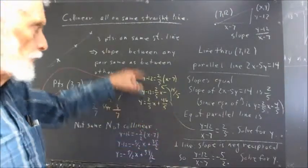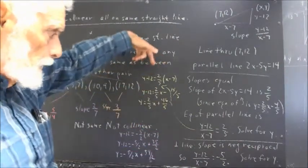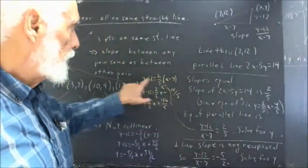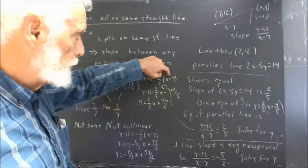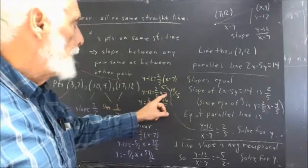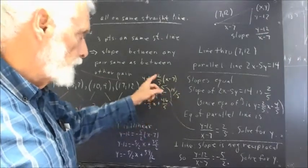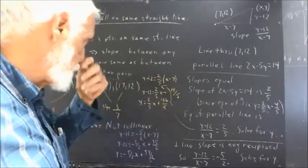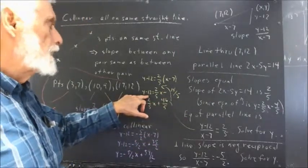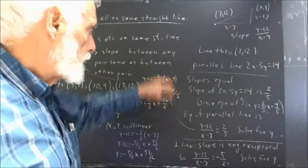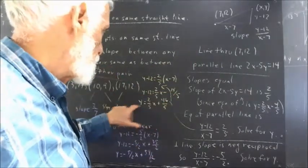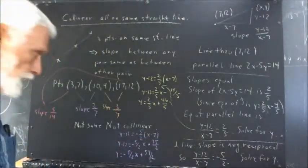And here I've written the solutions. They're kind of small. Might be a little hard to read. But if I multiply both sides of this equation by x minus 7, I get y minus 12 equals two-fifths x minus 7. And then I distribute the two-fifths. I get two-fifths x minus 14 fifths, because two-fifths times 7 is 14 fifths. And then I add 12 to both sides. 12 is 60 fifths. And if I add 60 fifths to negative 14 fifths, I end up with 46 fifths. So, I get y equals two-fifths x plus 46 fifths.